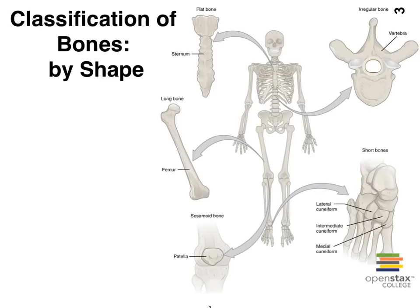We also have short bones, found especially in your ankles — the tarsal area — and your wrists — the carpal area. Be sure you don't mix them up. I always remember: toes, therefore tarsal — T-T. I do tricks like that in my head all the time, but it helps me. That's how you can differentiate them.